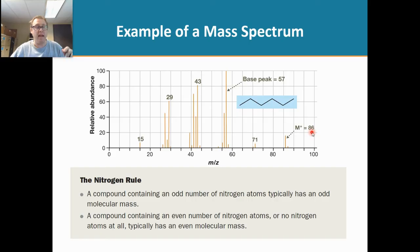if you have an odd number of nitrogens, then your M over Z, or your molecular ion peak, will be odd. But if you have an even molecular ion peak, it could mean that you have no nitrogens, or an even amount of nitrogens. Really straightforward example, or rule.